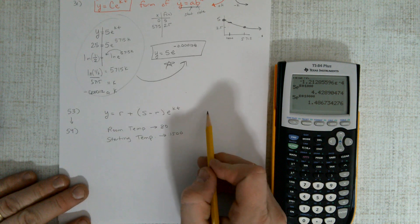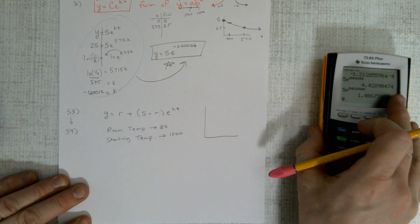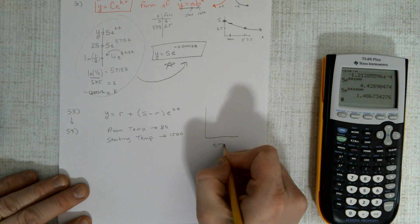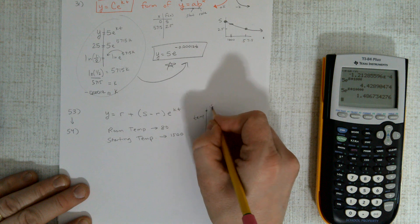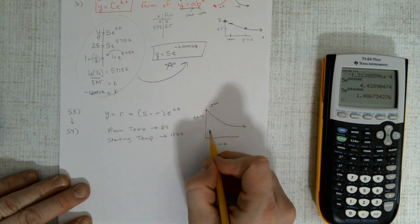53 is the exact same problem. We have time here graphed, we have temperature graphed here. We have a starting amount of 1,500, and the temperature is cooling and dropping down.